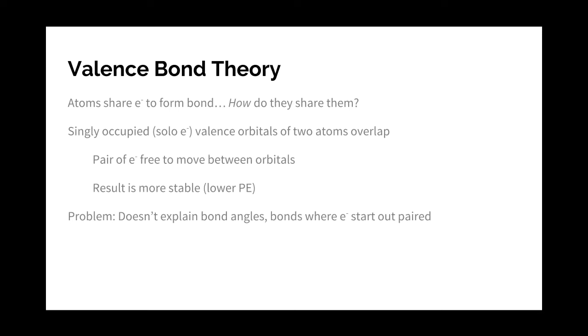Valence bond theory is an attempt to explain why and how atoms share electrons to form a covalent bond. What it says is that the valence orbitals of two atoms, each one containing a single electron, they overlap. Now the electrons are free to move between the orbitals of the two atoms, and the result is a more stable arrangement.